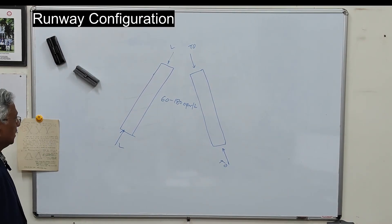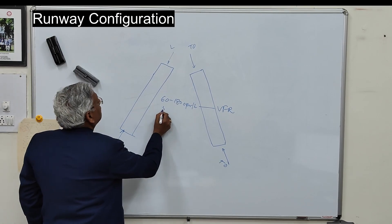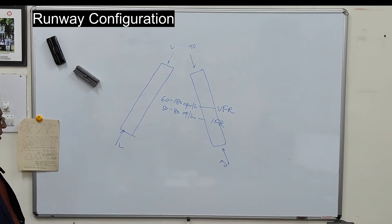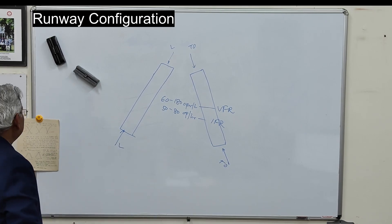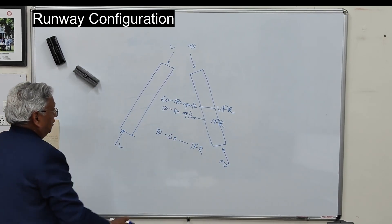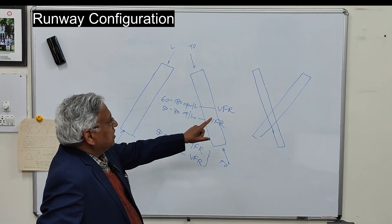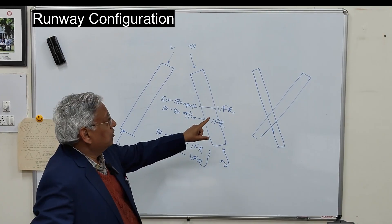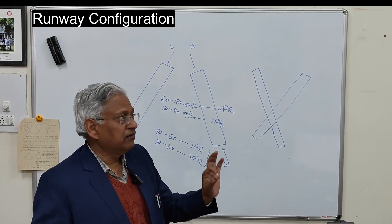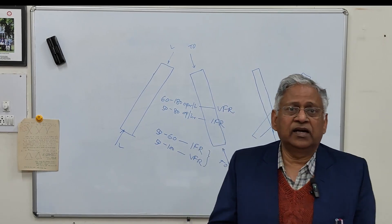In a diverging flight mode under VFR conditions, capacity is around 50 to 80 operations per hour under IFR conditions. When flight paths converge, this is reduced to 50 to 60 operations per hour under IFR, and around 50 to 100 under VFR. If wind conditions are not favorable and both runways cannot be used simultaneously, they revert back to single runway capacity. Intersecting and non-intersecting runways are provided only when a single runway does not provide enough wind coverage.